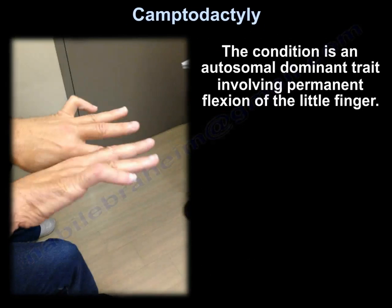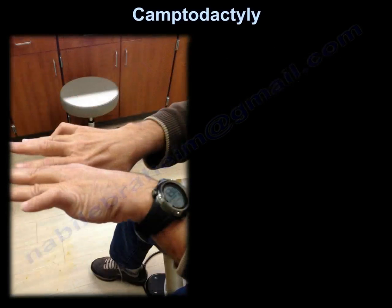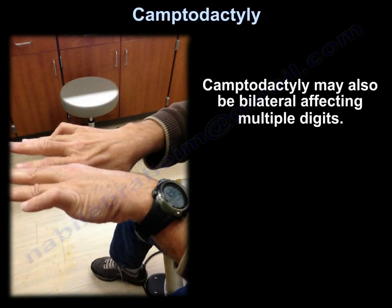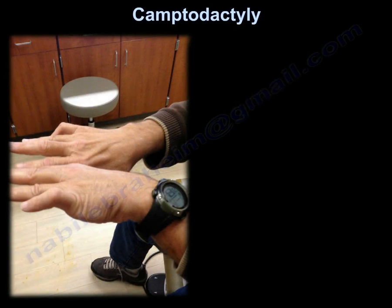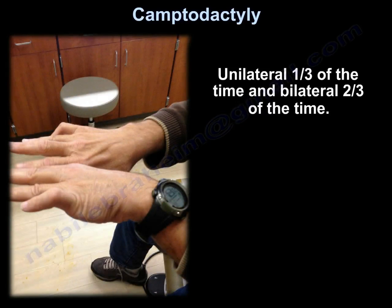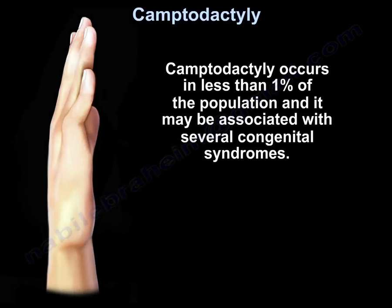The condition is an autosomal dominant trait involving permanent flexion of the little finger. Clinodactyly may also be bilateral, affecting multiple digits. It is unilateral one-third of the time and bilateral two-thirds of the time. It occurs in less than 1% of the population, and it may be associated with several congenital syndromes.